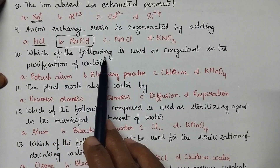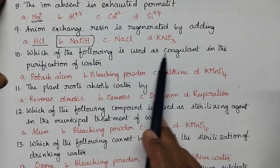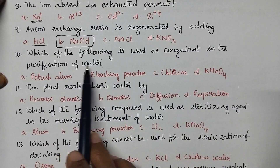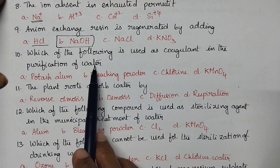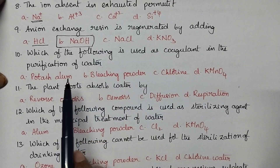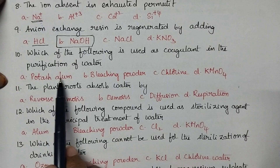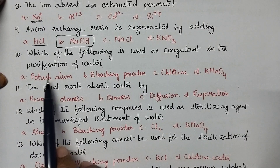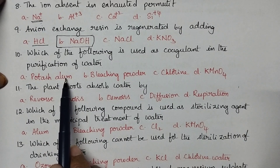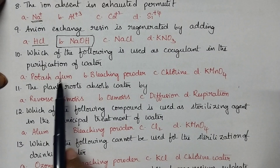Which of the following is used as a coagulant in the purification of water? During the purification of water, potassium alum is used for coagulation. So, potassium alum is used as a coagulant in the purification of water.